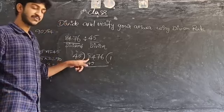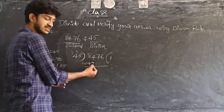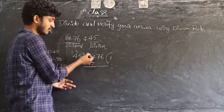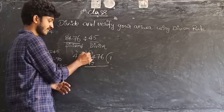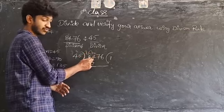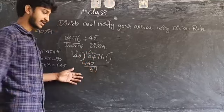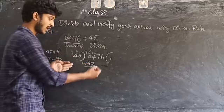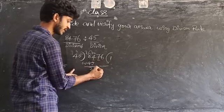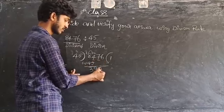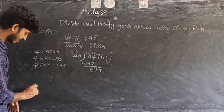Now we do the subtraction: 84 minus 45. Since 4 minus 5 is not possible, I take a borrow. 8 becomes 7, and 10 plus 4 is 14; 14 minus 5 is 9, and 7 minus 4 is 3. I get 39. Since 39 is less than 45, I bring down the next digit 7, making it 397.